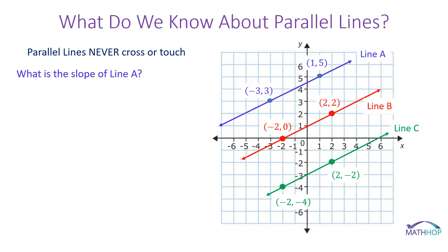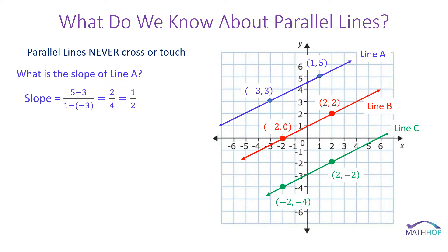What is the slope of line A? We could either use the coordinates and the slope formula — the difference in the y-coordinates is 5 minus 3 divided by the difference in the x-coordinates, 1 minus negative 3 — or we could use rise over run and see that we rise up 2 and our run is to the right 1, 2, 3, 4, giving us a slope of positive 2 over 4, or 1/2.